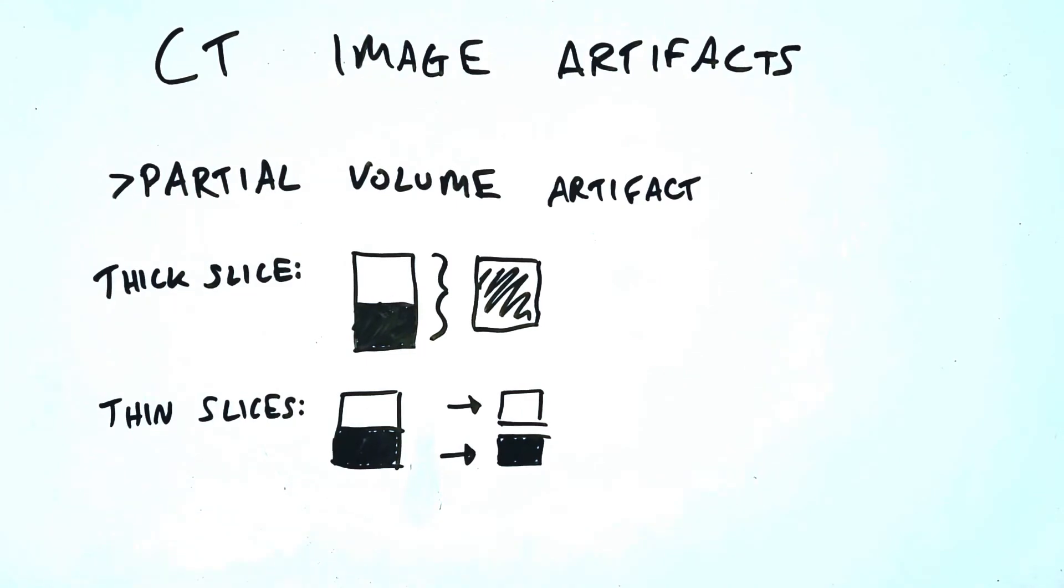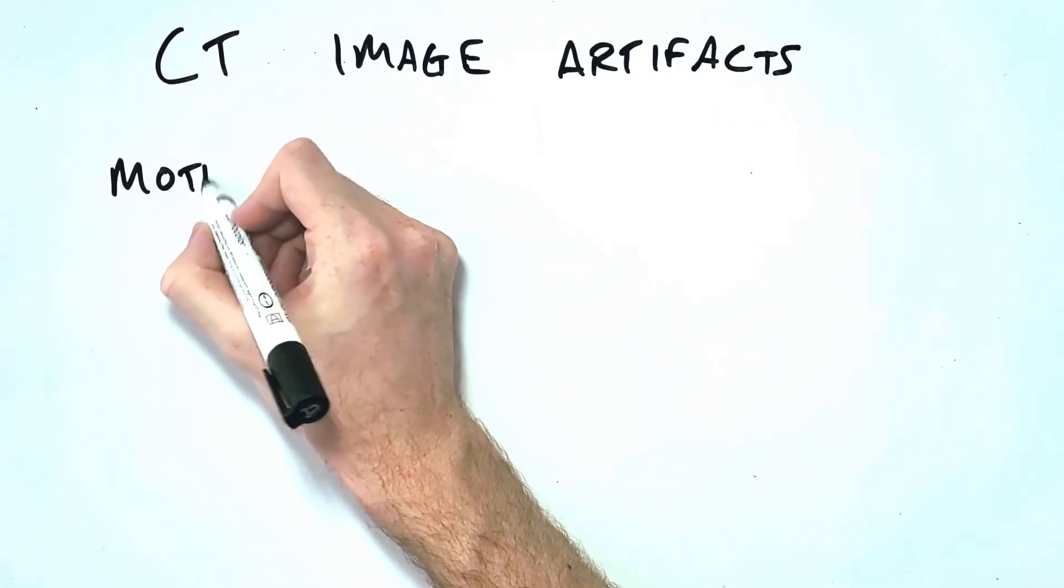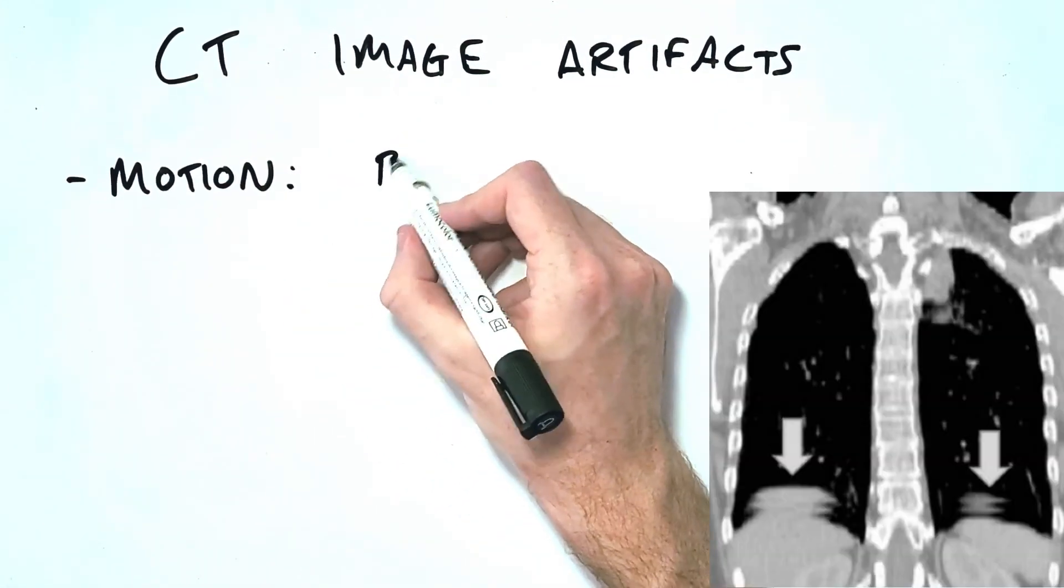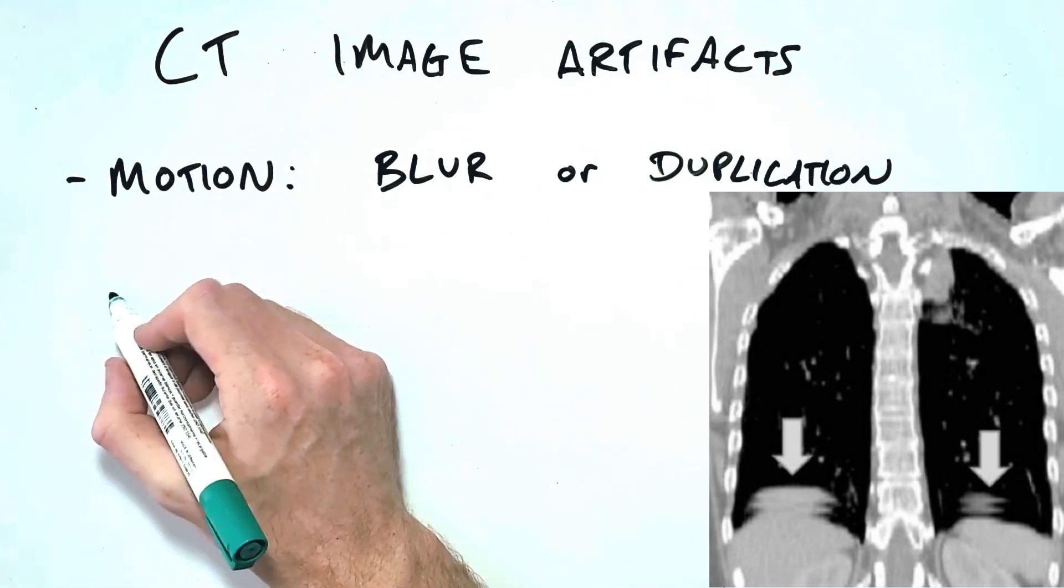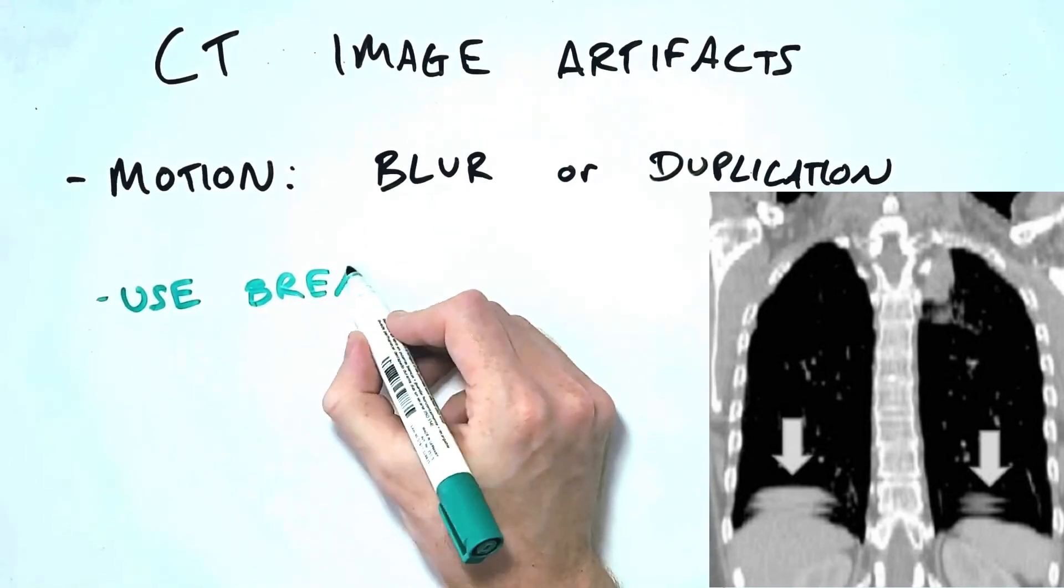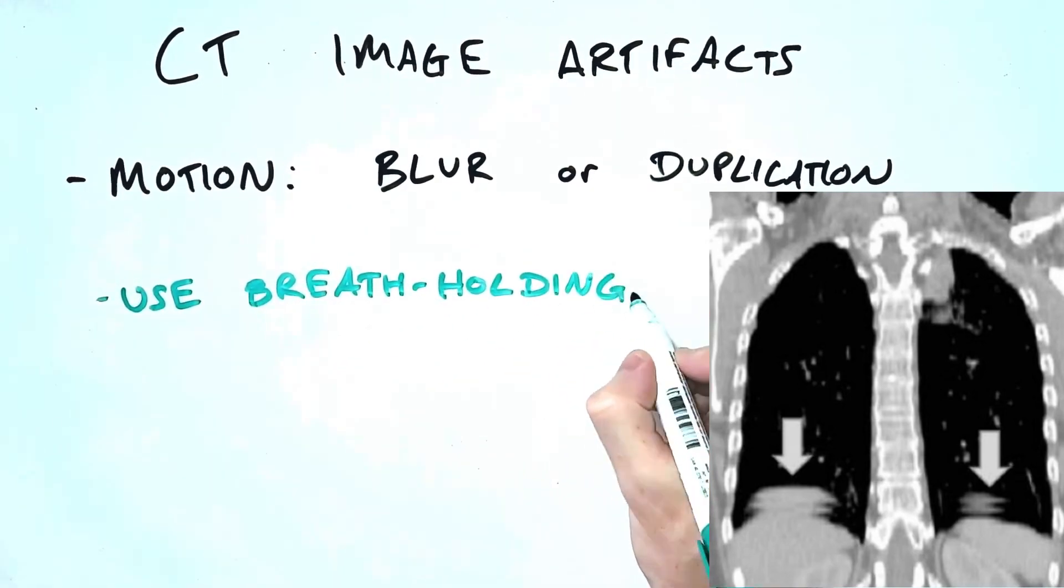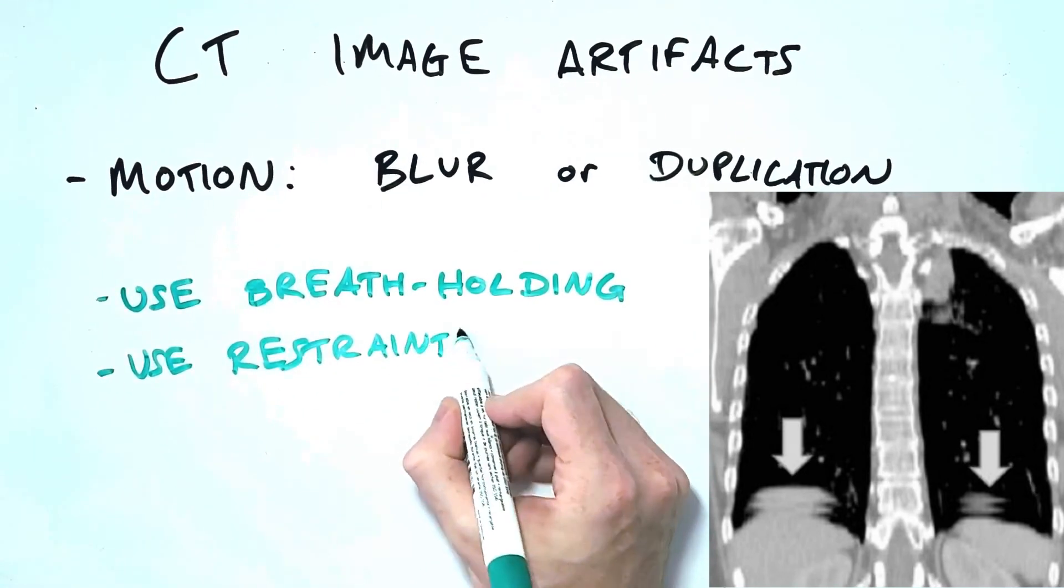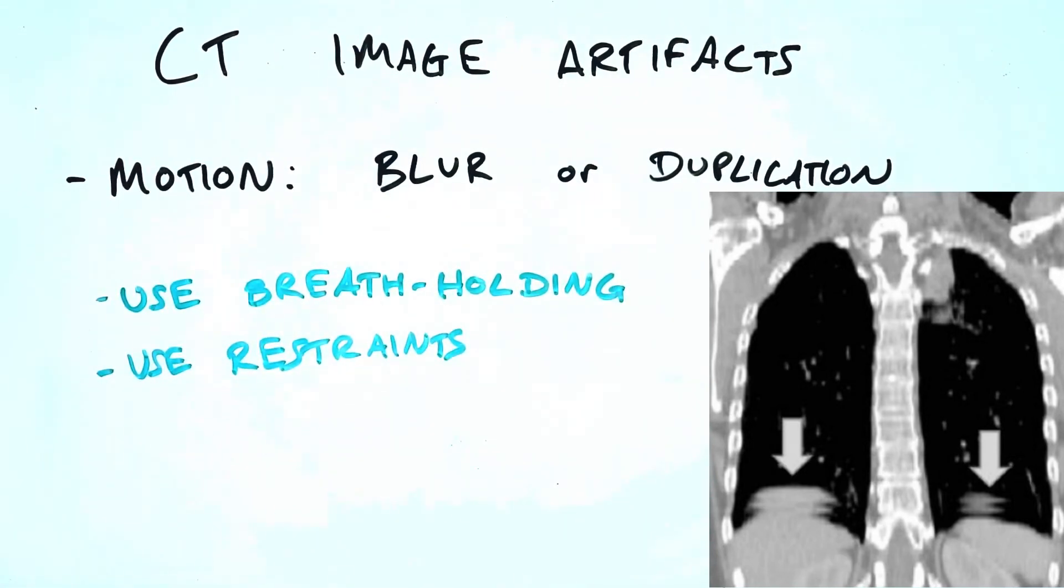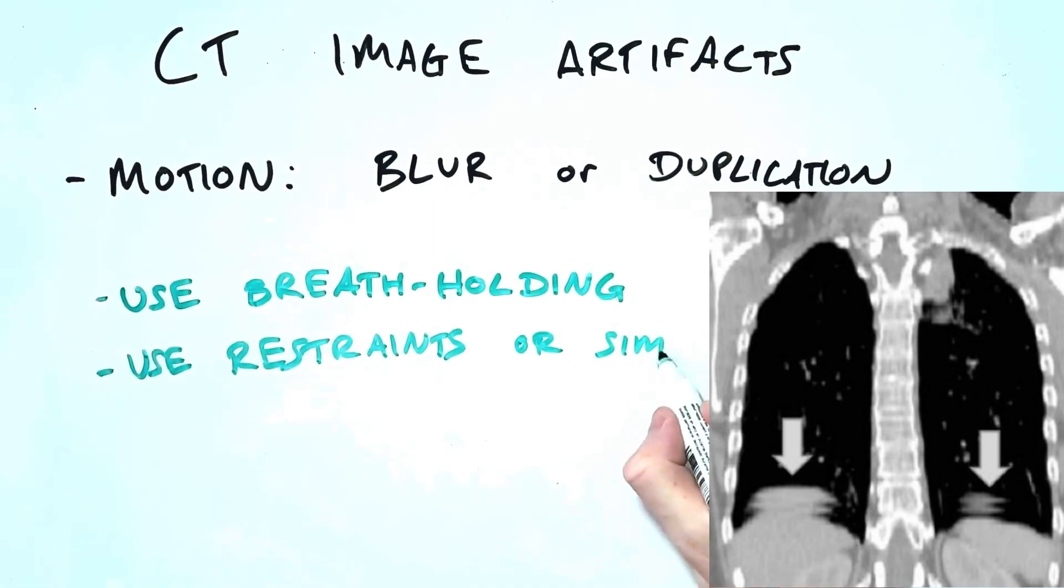Perhaps the easiest artefact to identify is motion and this applies simply as a blur or possibly as the same structure appearing in different positions between slices. The most common example would be motion in the chest due to the patient breathing so the solution is to have the patient hold their breath. If you're working in pediatrics you may need to be more creative with the methods to reduce motion, for example using distraction techniques, restraints or in some cases anaesthesia.